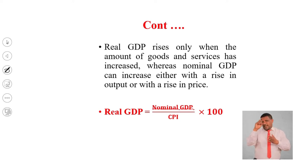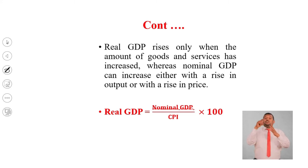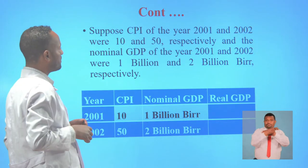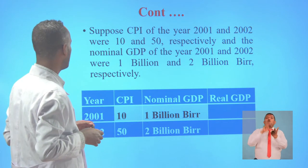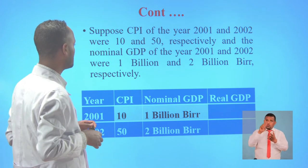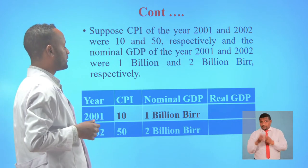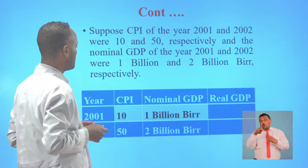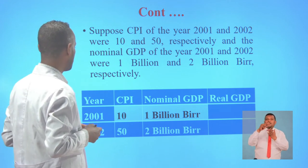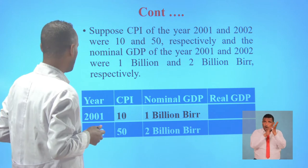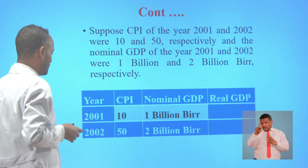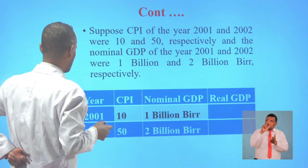Mathematically, real GDP is calculated by dividing nominal GDP by the consumer price index, multiplied by 100. Suppose the consumer price index of the year 2001 and 2002 were 10 and 50 respectively, and the nominal GDP of the year 2001 and 2002 were 1 billion and 2 billion respectively. Now we are going to calculate the real GDP of these two years, 2001 and 2002.